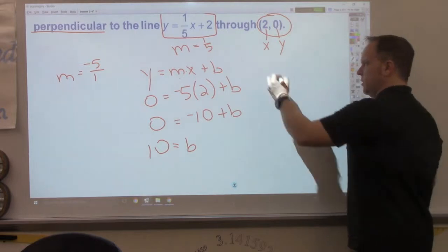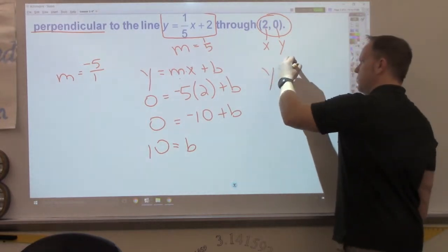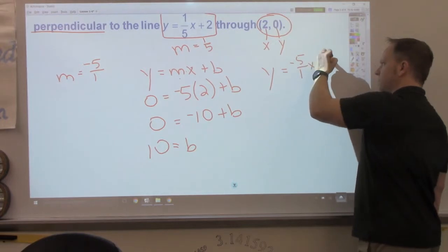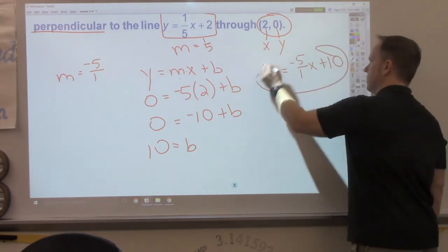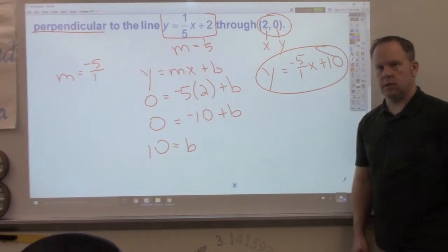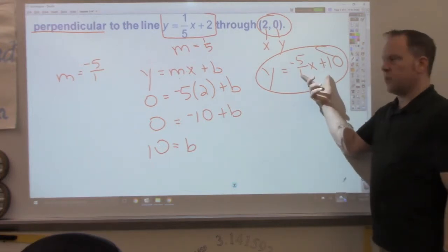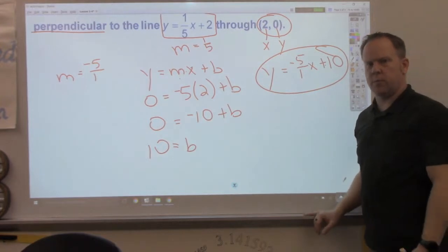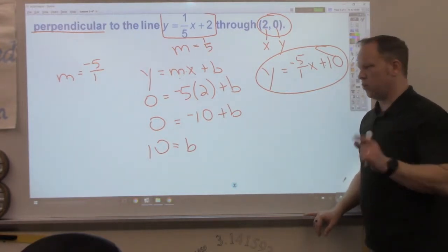Last step, write the equation. y equals negative 5 over 1x plus 10. This is perpendicular to this. Opposite reciprocals for perpendicular lines. Let's try that one more time.